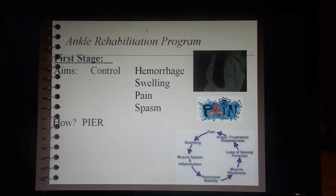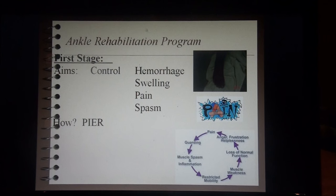In our ankle rehab program's first stage, our aim is to control hemorrhage, swelling, pain, and spasm — this is our acute injury stage. We do this with PEER: pressure, ice, elevate, and rest. We go through the pain cycle: pain leads to guarding, muscle spasm and inflammation, restricted mobility, muscle weakness, loss of normal function, and of course feelings of anger, frustration, and helplessness. That is the pain cycle for any injury.